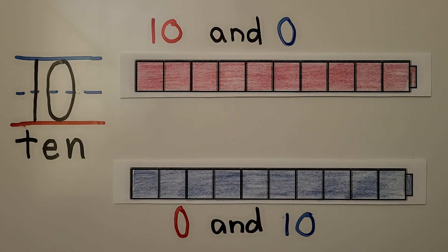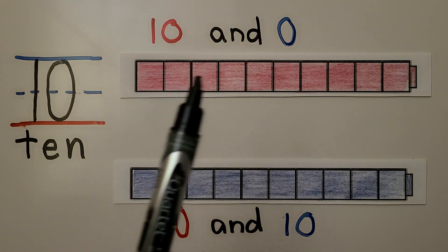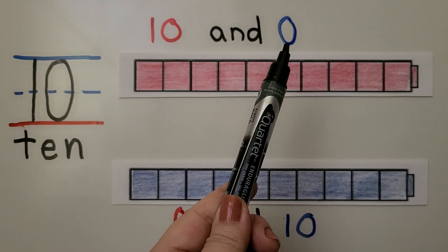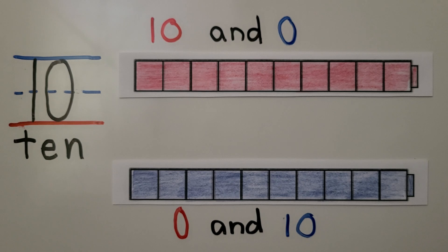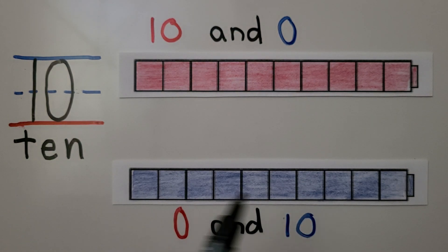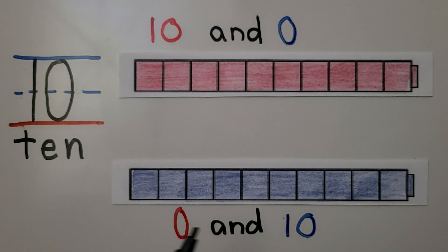We can show 10 as 10 red cubes in our cube train and zero blue. And we can show it as zero red — there's none — and 10 blue. Our number pairs are 10 and 0, or 0 and 10.